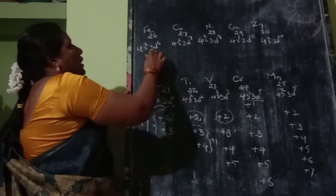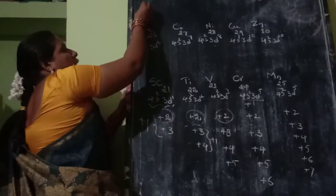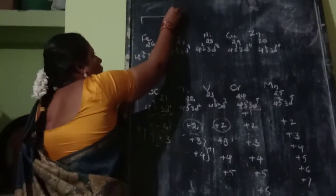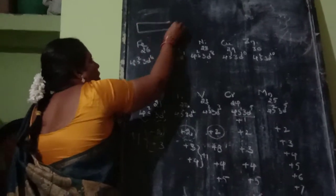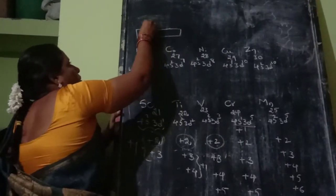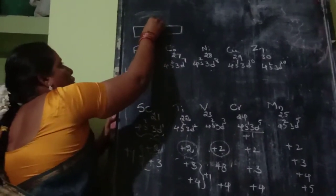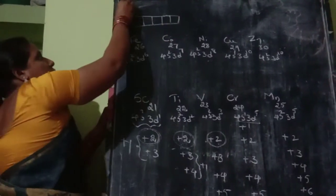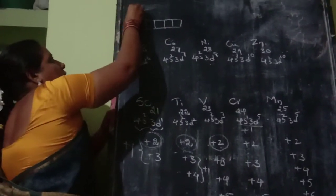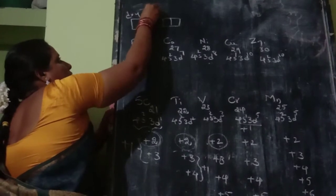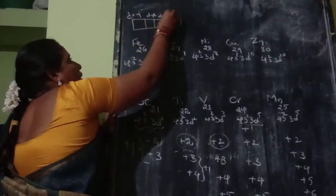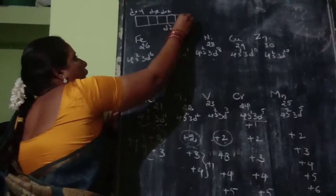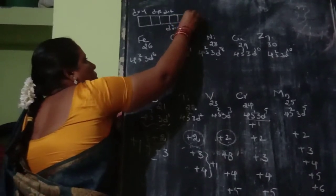Based on the configuration, in the D orbitals there are 5D orbitals: DXY, DYZ, DXZ, DX²-Y², and DZ². So there are 5D orbitals in total.